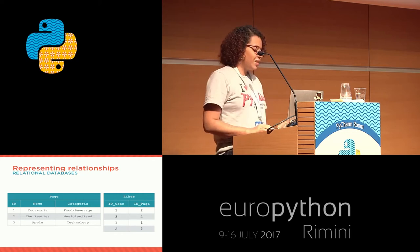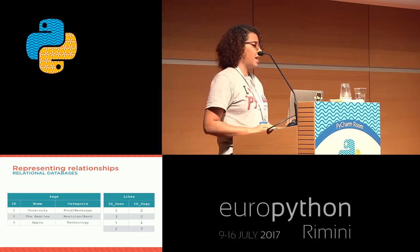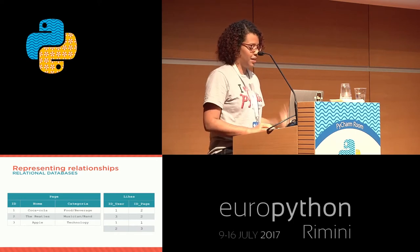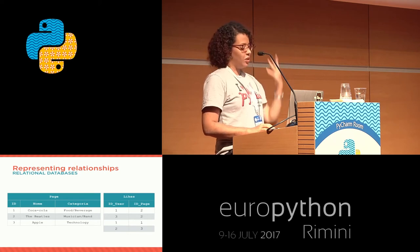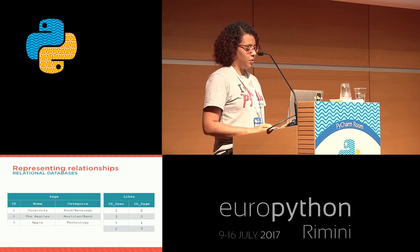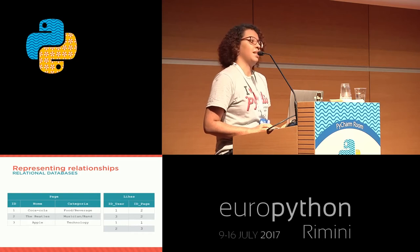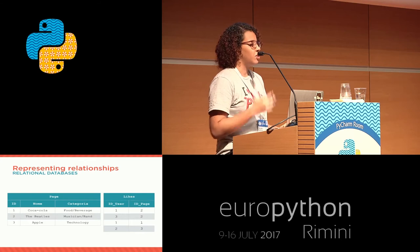To answer this really simple question, I had to query three different tables just to get the pages that the user John likes. That was not fun - a lot of going back and forth to figure out by an ID which one is which. Tables are not the best way to do it. So how can we use a better data structure to represent this data so we can answer this kind of question faster and more intuitively?